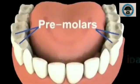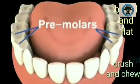Premolars. Premolars come next to the canines. They are broad and flat. There are four premolars in each jaw, so there are a total of eight premolars. They help to crush and chew food.